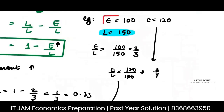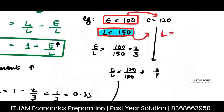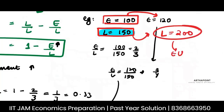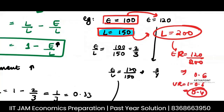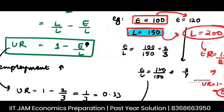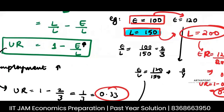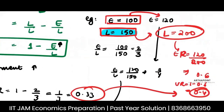Take the same example. Suppose when people who were employed increased from 100 to 120, in the background people who were in the labor force also increased from 150 to 200. Then the employment rate will be 120/200 = 0.6, and the unemployment rate will be 1 minus 0.6 = 0.4. So the unemployment rate increases from 0.33 to 0.4.